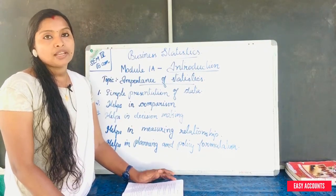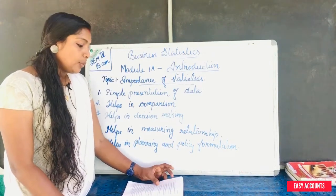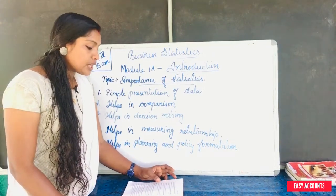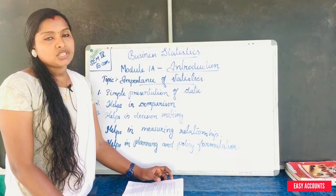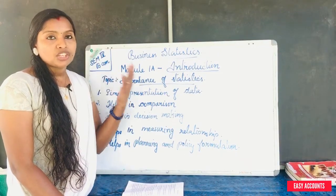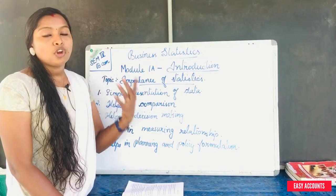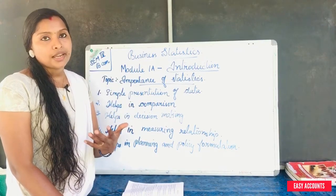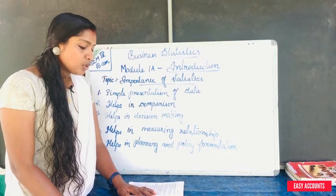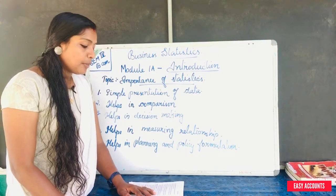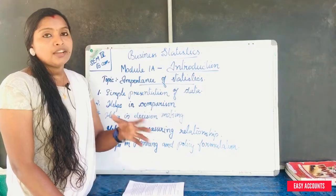Statistics helps in measuring relationships. How do you measure things? That's why we say the third function: measuring the relationship between different phenomena. Statistics help in measuring the relationship between variables — two variables.